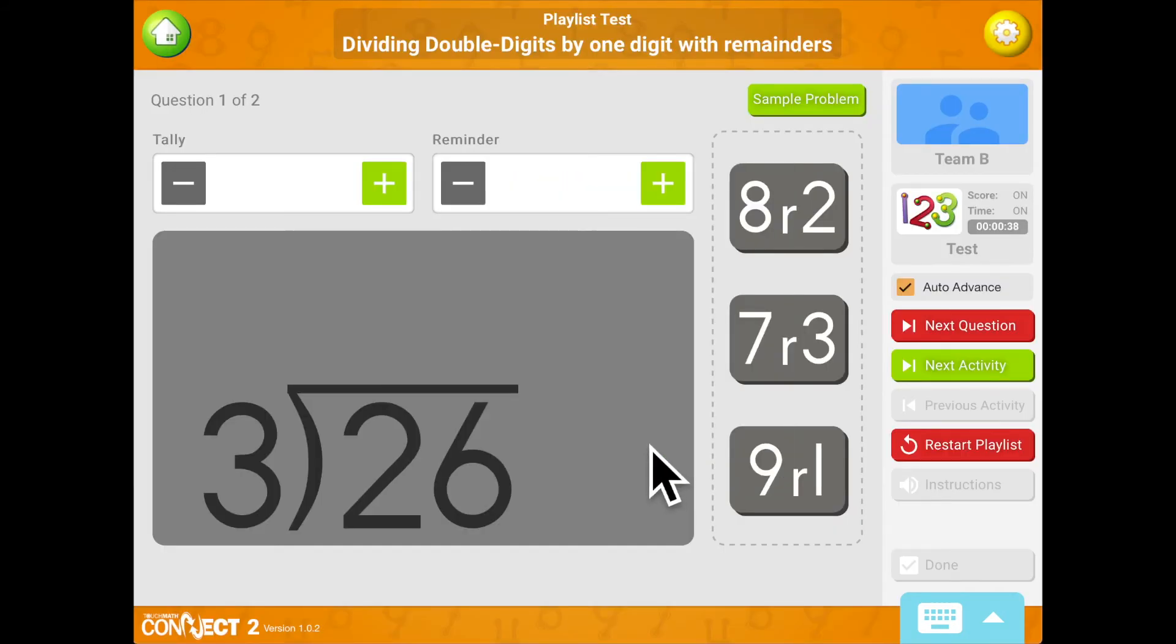Skip count by the divisor and get as close to the dividend as you can, without going over the dividend as you click on the tally box. Continue counting by 1 up to the dividend as you click to the right of the tally box to find the remainder. Count the tally marks and then the remainder dots to find the answer. Choose the correct answer.